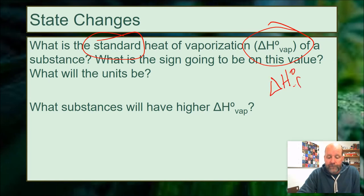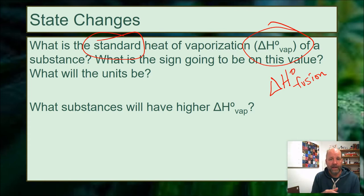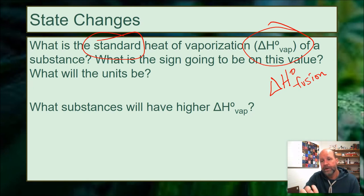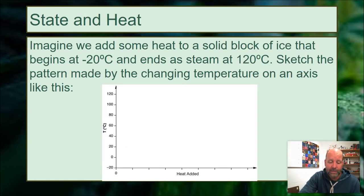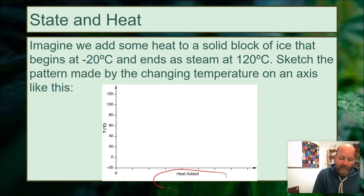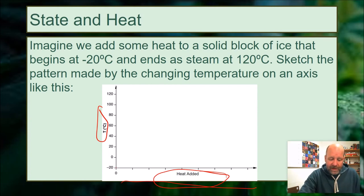The standard heat of fusion is essentially the same concept — the heat released when we freeze something. For signs, always think conceptually: which way is heat moving? If heat's going in, it's positive; if heat's coming out, it's negative. Don't determine the sign mathematically — determine it conceptually. Now imagine adding heat to a solid block of ice starting at −20°C until it becomes steam at 120°C. Sketch the temperature versus heat added on an axis — it won't be a straight line or a curve, but a series of straight lines.